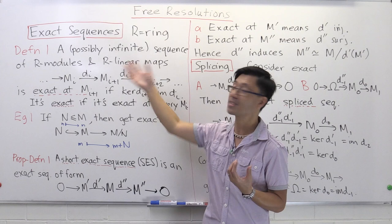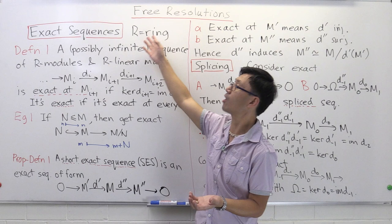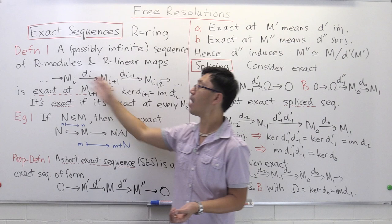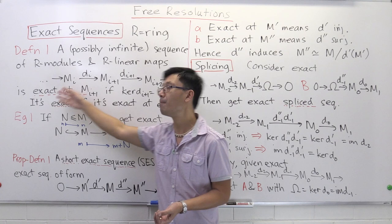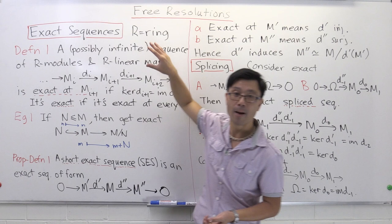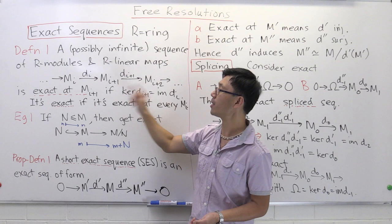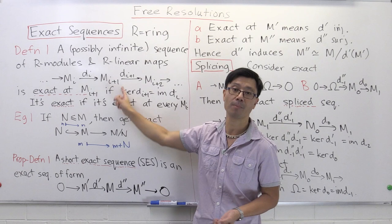Let's start with the first notion we need to introduce: exact sequences. One way to think about exact sequences is, if you know about complexes, it's a complex with no trivial homology or cohomology. We'll work in the setting of modules over some ring R. We look at a sequence of R-modules M_i, M_{i+1}, M_{i+2}, and so forth, possibly infinite, with R-linear maps between them. To be exact at one of these modules—say at M_{i+1}—means that the kernel of the map d_{i+1} is equal to the image of the preceding map.